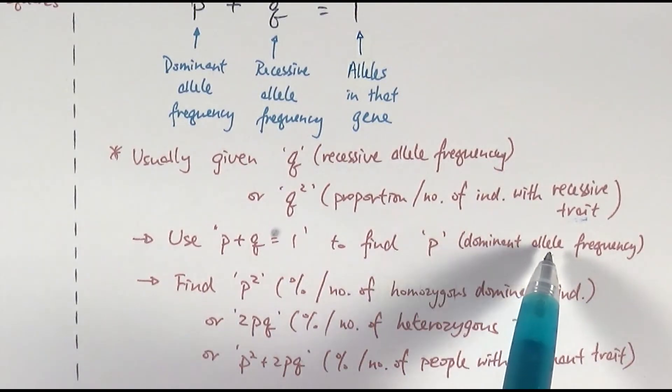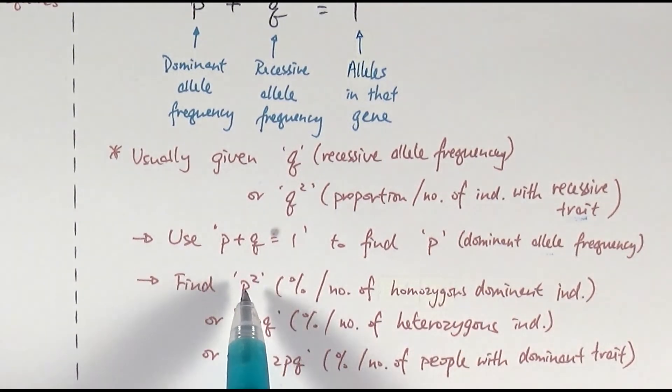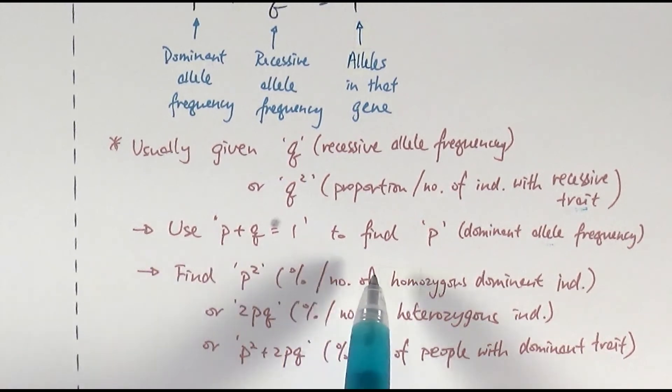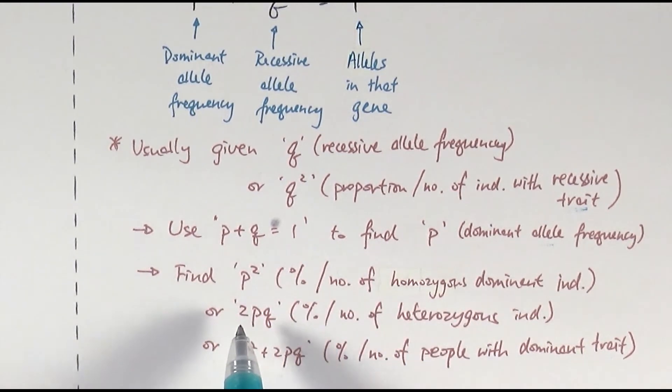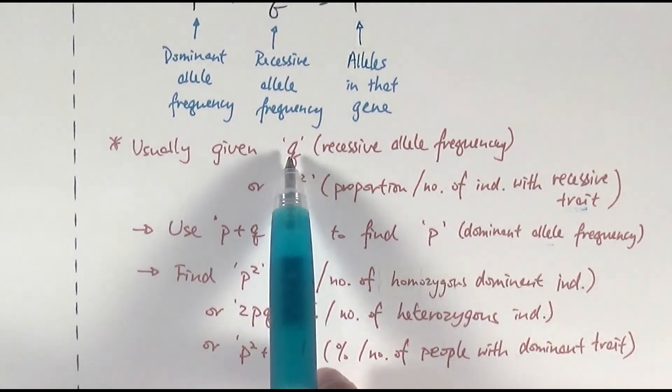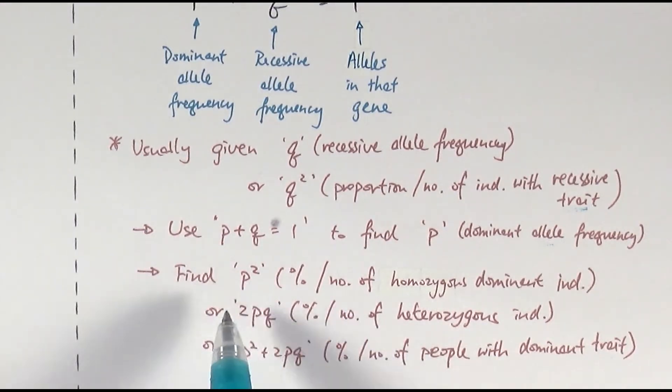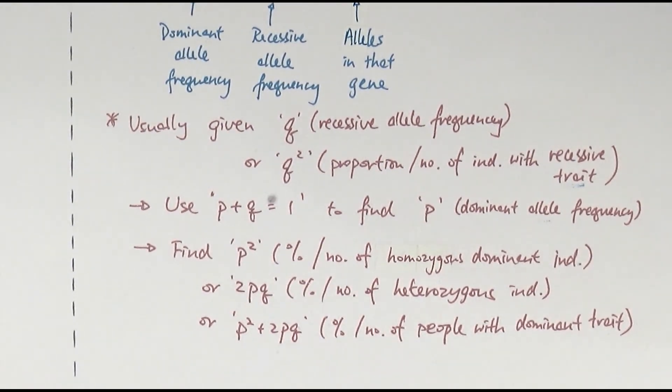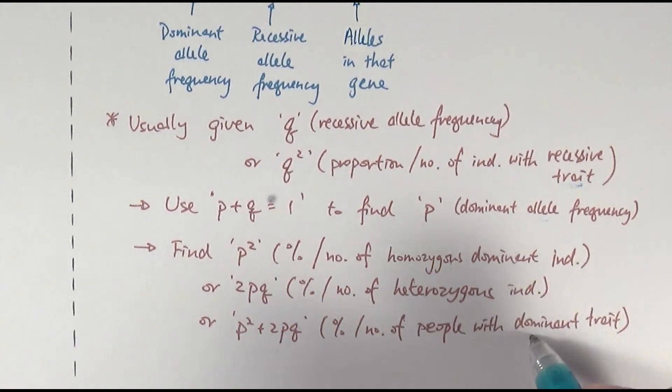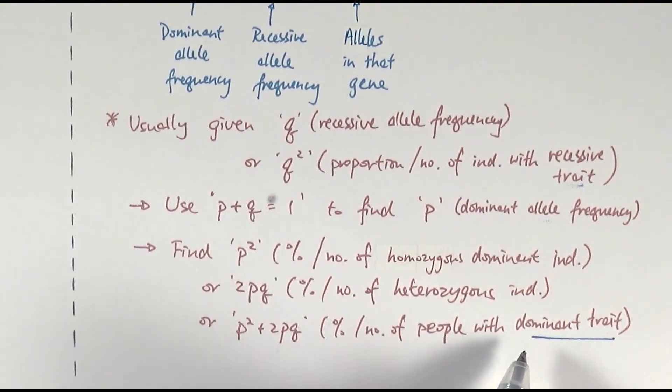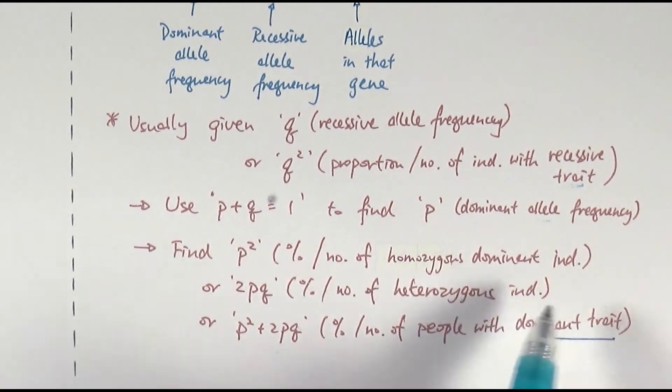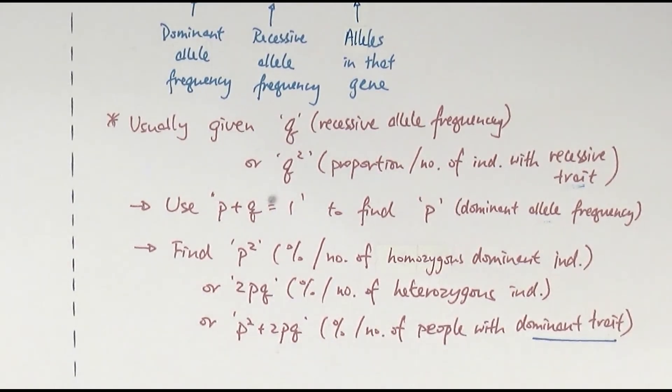Then using that, if you know the dominant allele frequency, you can work out the proportion or the number of people with P squared or 2PQ. So P squared is simply to square that number there, and then you can find the proportion, and then times it by the total number of people to find the number of individuals. Or do 2PQ, so 2 times P times Q, which is given in your question, and then to work out the heterozygous proportion there. Or sometimes in certain questions they might say, can you find the proportion of people that show the dominant trait? Now notice if they show the dominant trait, this includes both homozygous dominant and heterozygous. So just be very careful in seeing if they're looking for the genotype or the phenotype. If it's the phenotype, then you have to add both of these proportions up. So P squared plus 2PQ to find the number of people with the dominant trait, the dominant phenotype.